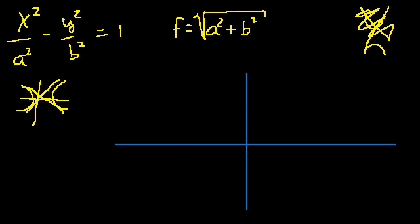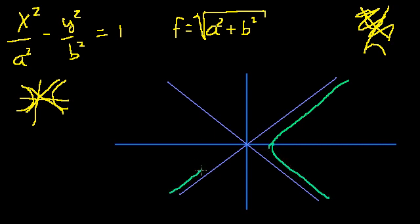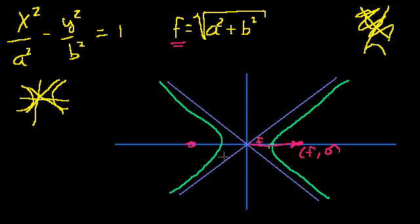The asymptotes of this hyperbola are the lines y = ±(b/a). The hyperbola will look something like this, intersecting at (a, 0) and (–a, 0) — we saw all of this in the previous video. The focus points are going to sit out here, and the focal length — the square root of a² + b² — is just this distance. This point is (f, 0) and this one is (–f, 0).